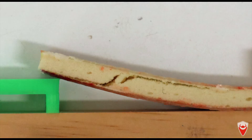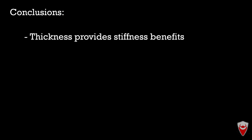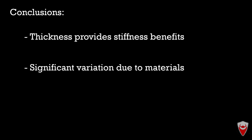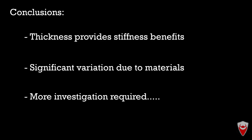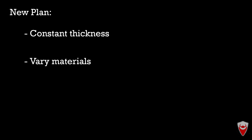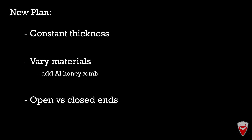So where to from here? I think I've proved that adding some thickness improves stiffness, but I've also highlighted far more variance in foam core materials than I expected. I'm going to redo this experiment and remove some of those variables. Next time I'll use a constant thickness core and only vary the materials, so we can compare apples to apples. I'll also throw in another core material — I've got some aluminium honeycomb — and I'll do some samples with a closed end to see how much that changes stiffness with the same core.